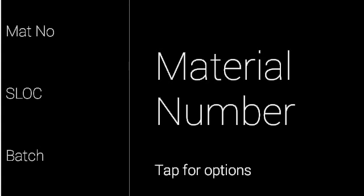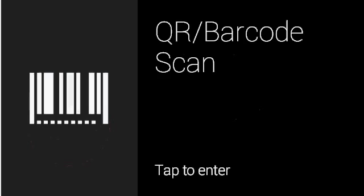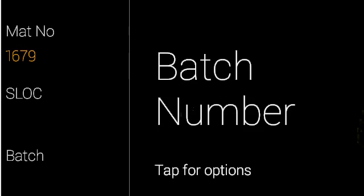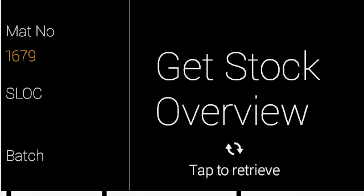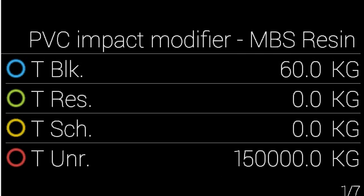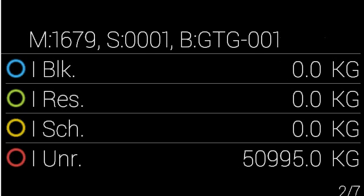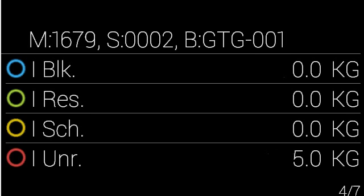So, let us scan the material for which we need the stock information. Once this is done, we can quickly go over and get the stock information from SAP. The stock information across block, reserved, scheduled, unreserved, and any other categories are available for the user to see on the glass. The user can look at the breakdown of this information across storage locations and batches by moving through head gestures or hand gestures. This stock information is available to the operator very easily while driving the forklift.